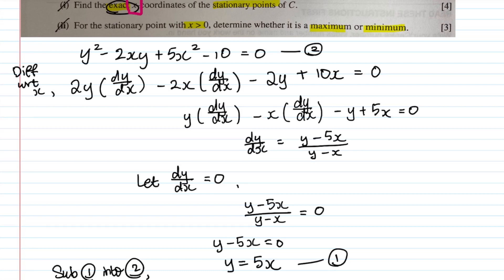For Part 2, we use the stationary point where x > 0, so x = 1/√2. To determine maximum or minimum, we find d²y/dx². A negative value of d²y/dx² means a maximum point; a positive value means a minimum point. Since we used implicit differentiation, we'll differentiate dy/dx one more time implicitly rather than using a graphing method.